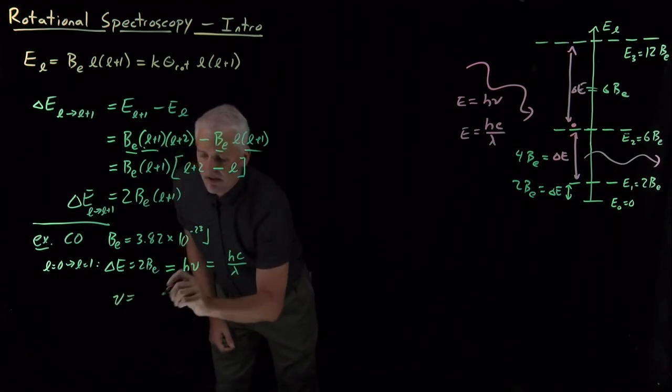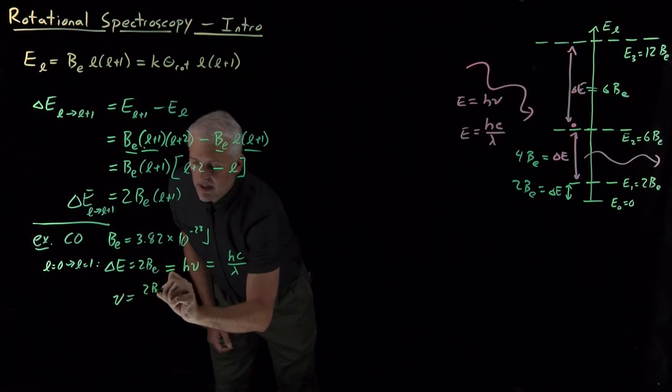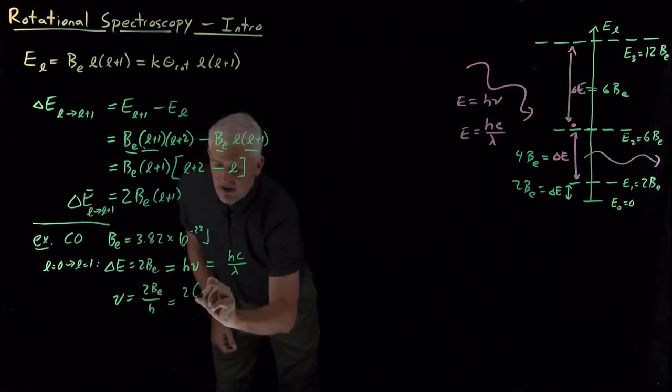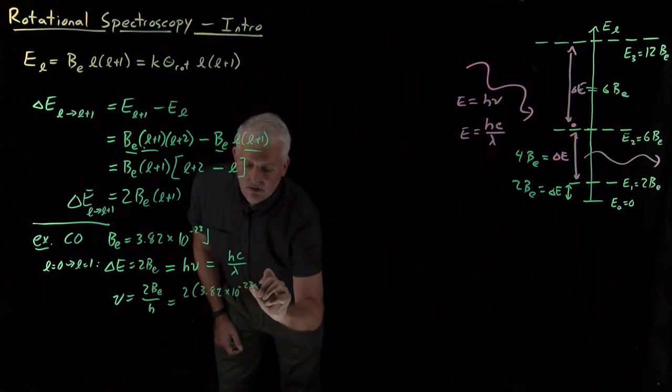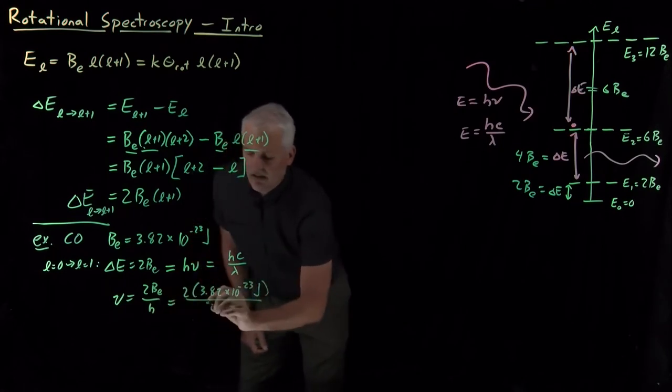The frequency would be, rearranging this expression, twice B over h—so twice this rotational constant divided by Planck's constant.